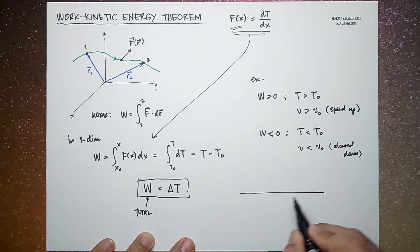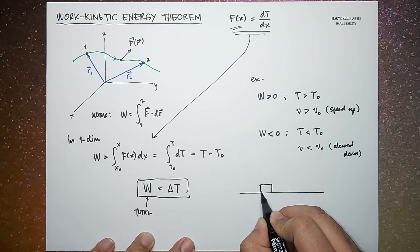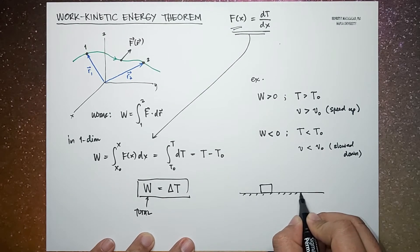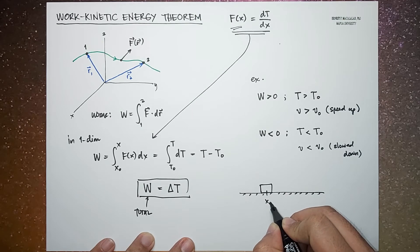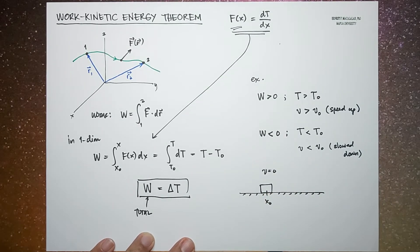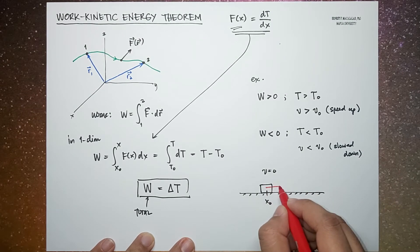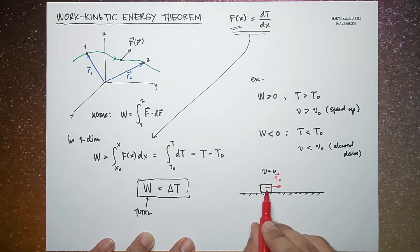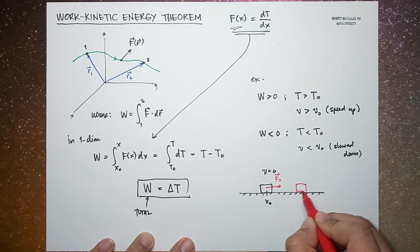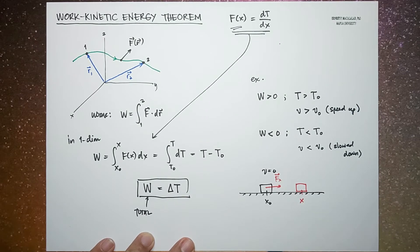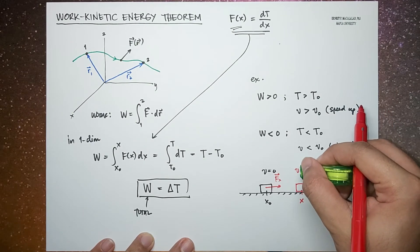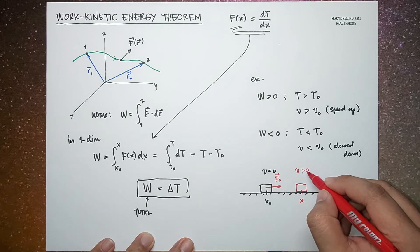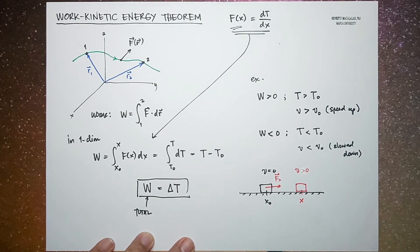An example: consider a block on a frictionless surface that is pushed. At x-naught the speed is zero. A force is exerted to the right, so the object will eventually move. At a later time t the position is at x, and at this point the velocity is not equal to zero — in fact the velocity is greater than zero, so the object speeds up.